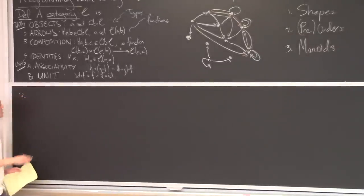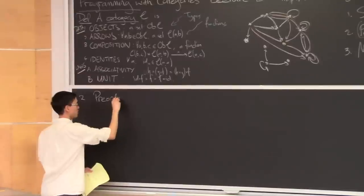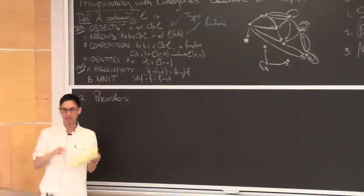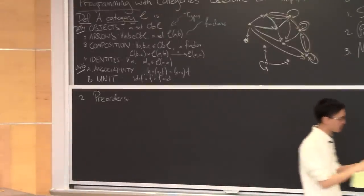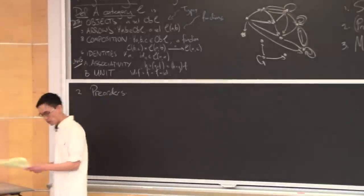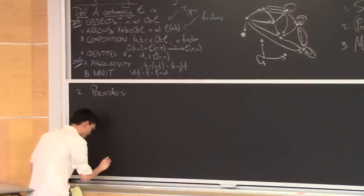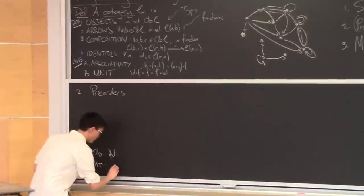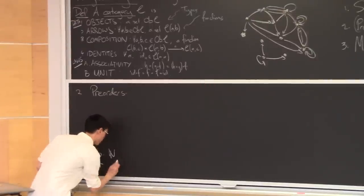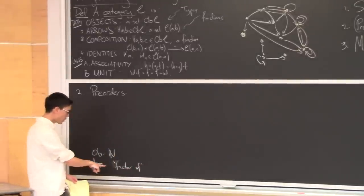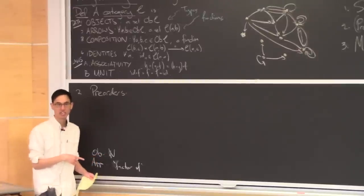Second class of examples: pre-orders. These are categories where we make the arrow set deliberately very thin — we restrict ourselves to having at most a single arrow between a pair of objects, or none at all. All of the previous shape examples are in fact pre-orders. To give more of the order flavor, one example is a category where the objects are the natural numbers, and you have an arrow from A to B if the natural number A is a factor of the natural number B.